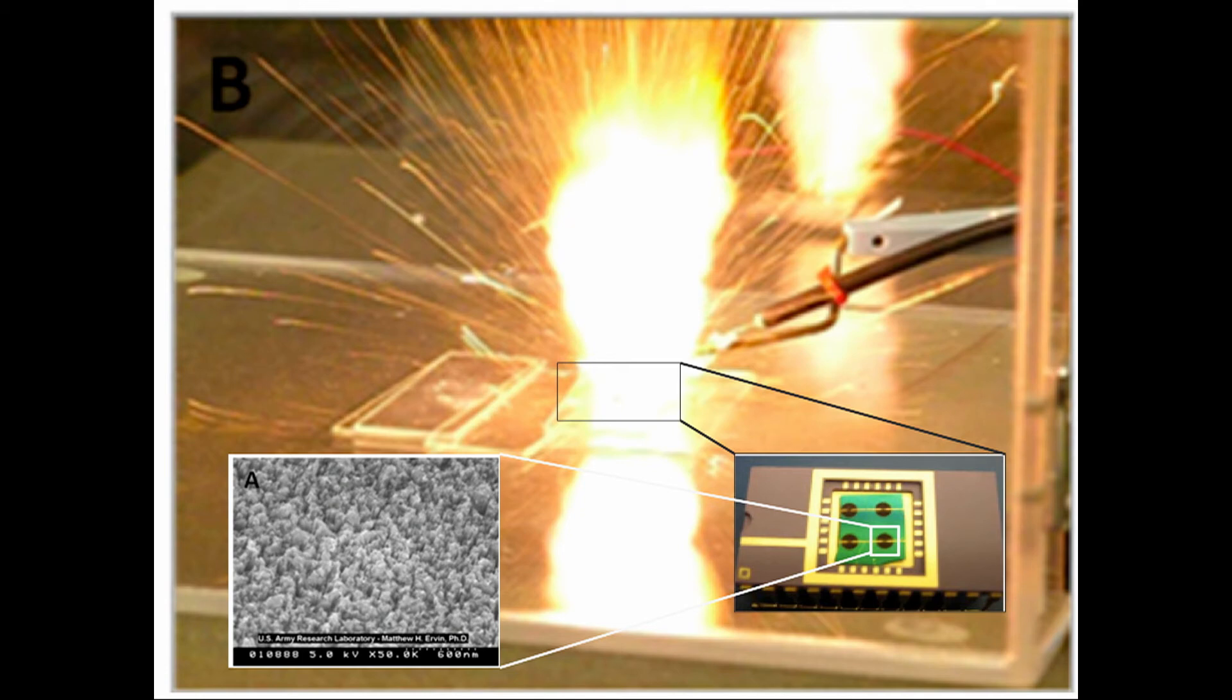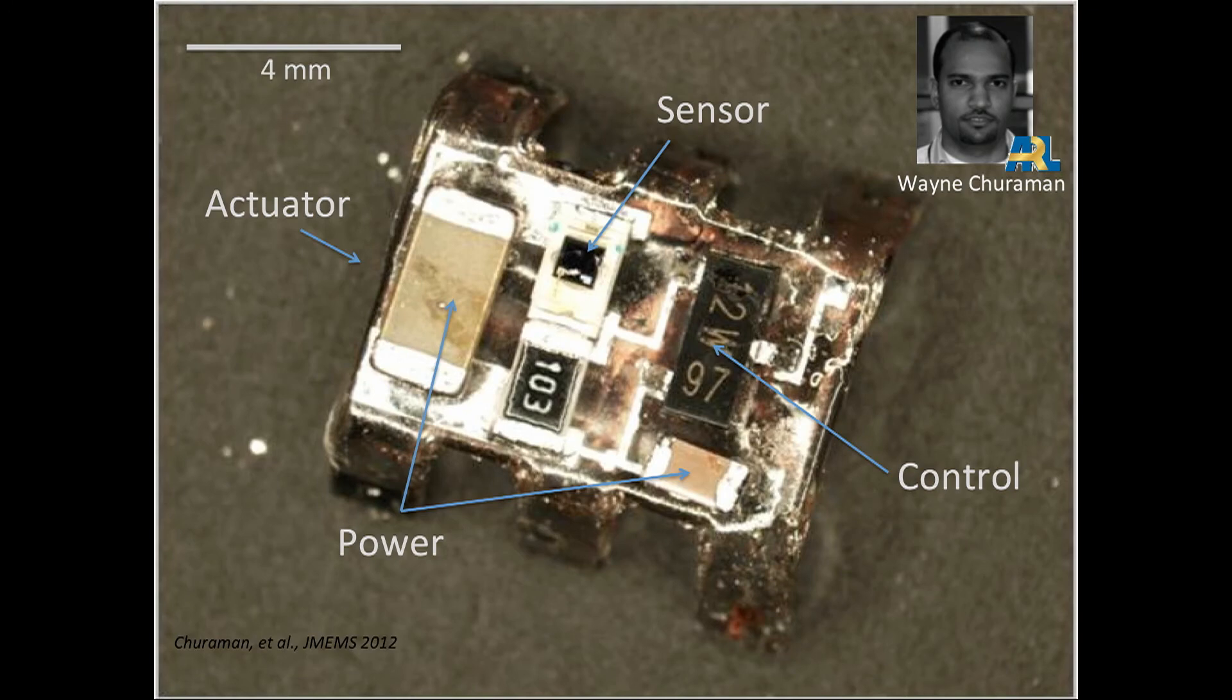And the cool thing about this is that we can actually combine this then with our robot that I showed you earlier, put it on the belly of this, and we can effectively have our little micro rocket robot for jumping. So the next video, one of my favorite videos, you see this thing jump up, a big flash at the beginning. This is about a thousand frames per second, and it flies through the air. So pretty cool, I think, at least.